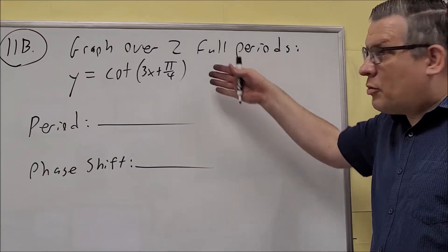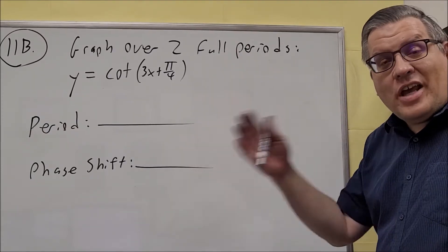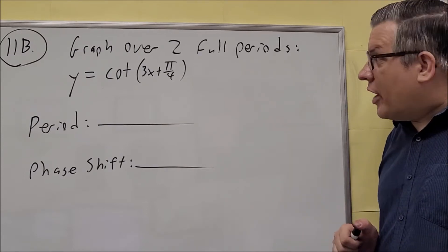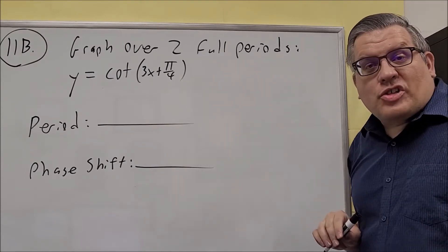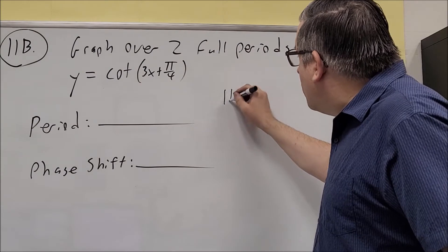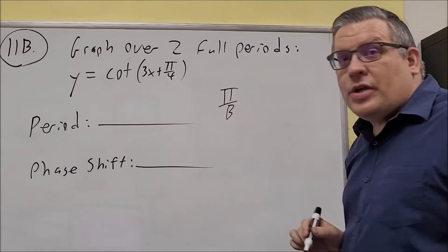11b, again, this number 11 on the test is either going to be a tangent or a cotangent graph. Now, no matter if it's tangent or cotangent, period is always going to be the same. It's π over b is the formula.